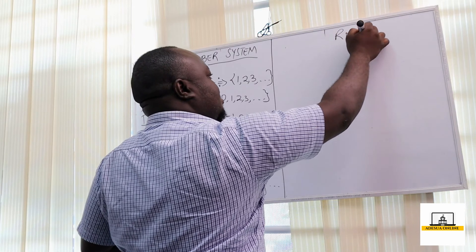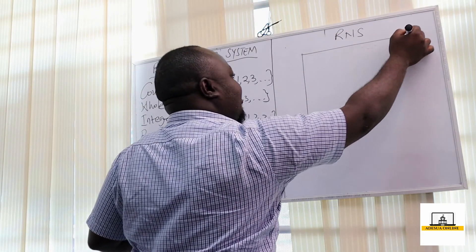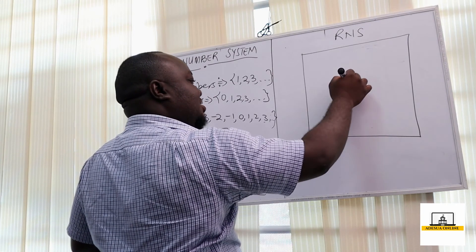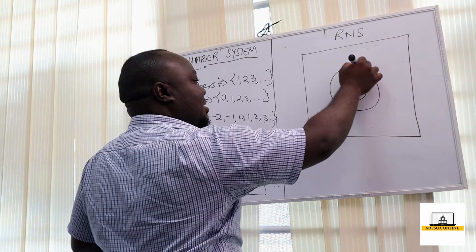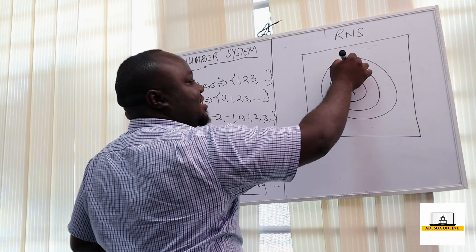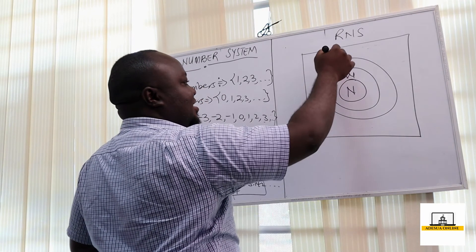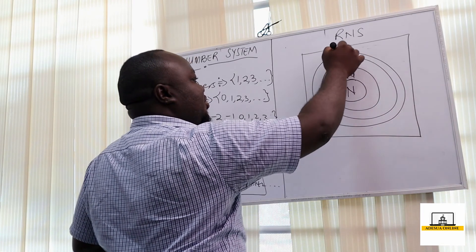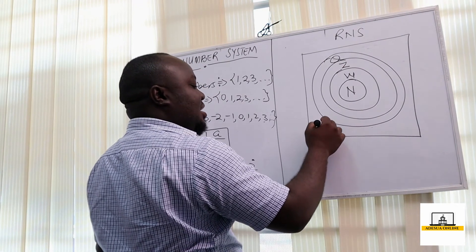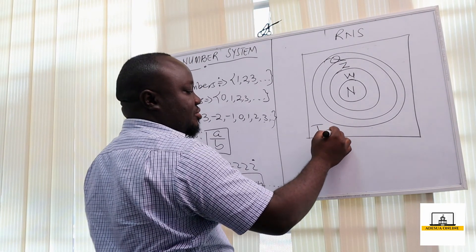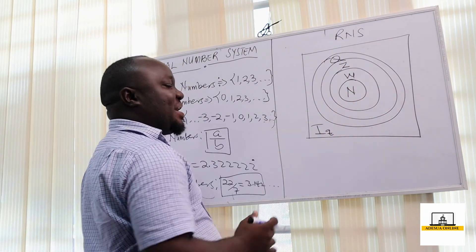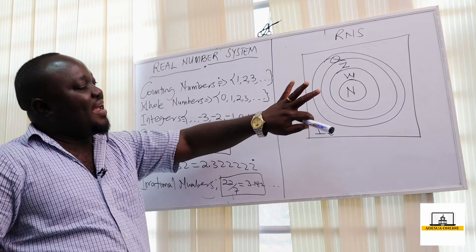The real number system consists of all of these: the set of natural numbers, the set of whole numbers, the set of integers — denoted by Z, rational numbers — denoted by Q, and irrational numbers — denoted by I with subscript Q. All these numbers together make up the real number system.